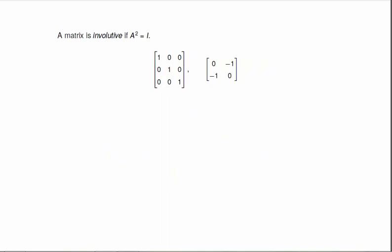A matrix is involutive if A squared is equal to the identity. So once again, we have two involuted numbers. One squared is one, and negative one squared is one.